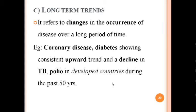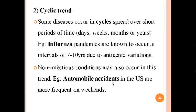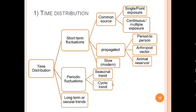Long-term trends, also known as secular trends, refer to changes in the occurrence of disease over a long period of time. For example, coronary heart disease and diabetes show a consistent upward trend, while there has been a decline in TB and polio in developed countries during the past 50 years. These are the trends and fluctuations with respect to time distribution.